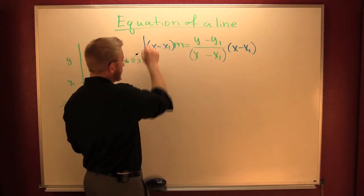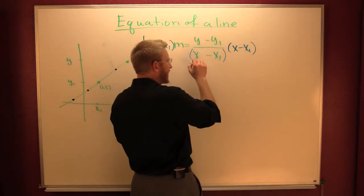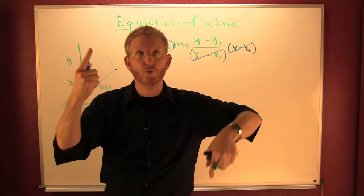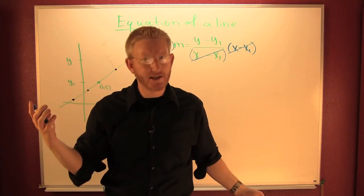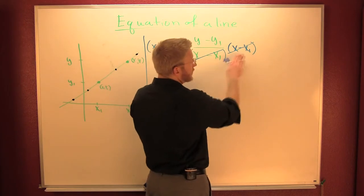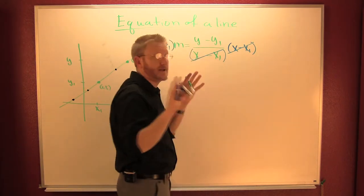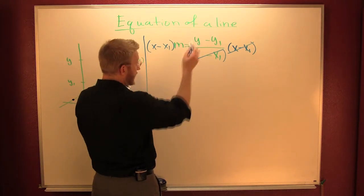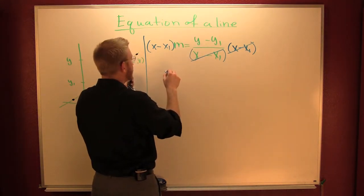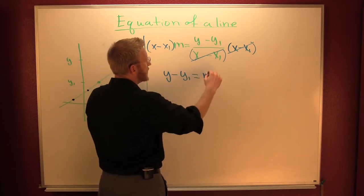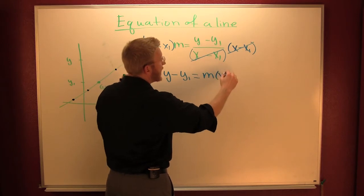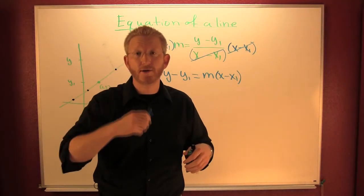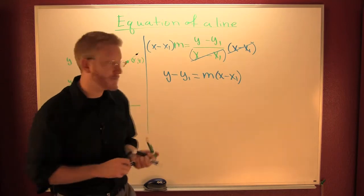So x minus x1 on the left. On the right, they cancel — because x minus x1 over x minus x1 is 1, provided the denominator isn't 0. But then you wouldn't have two points and you wouldn't have a line anyway. So what am I left with? Using the reflexive property, y minus y1 equals m times x minus x1. That's how to find the equation of a line if you have a point and a slope — conveniently named point-slope.